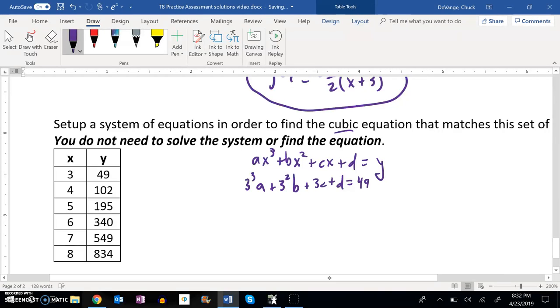And if I plug in the next one, 4, 4³ times a plus 4² times b plus 4 times c plus d equals 102. I can keep going from here.